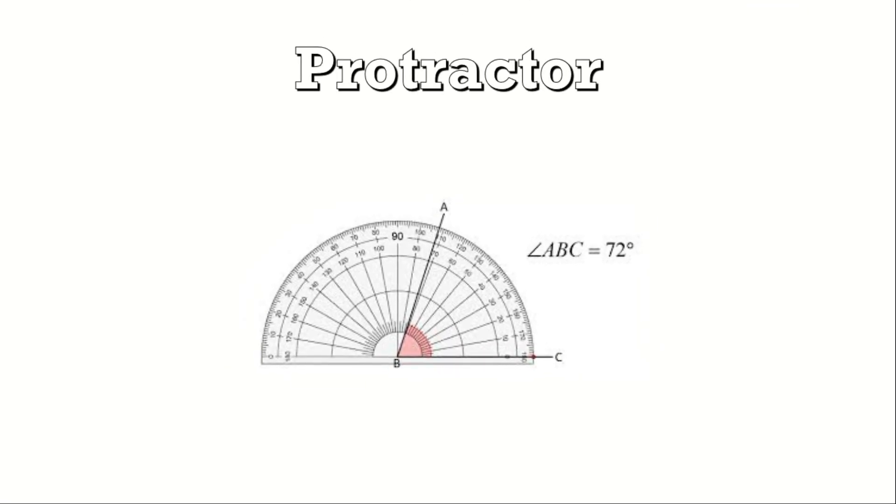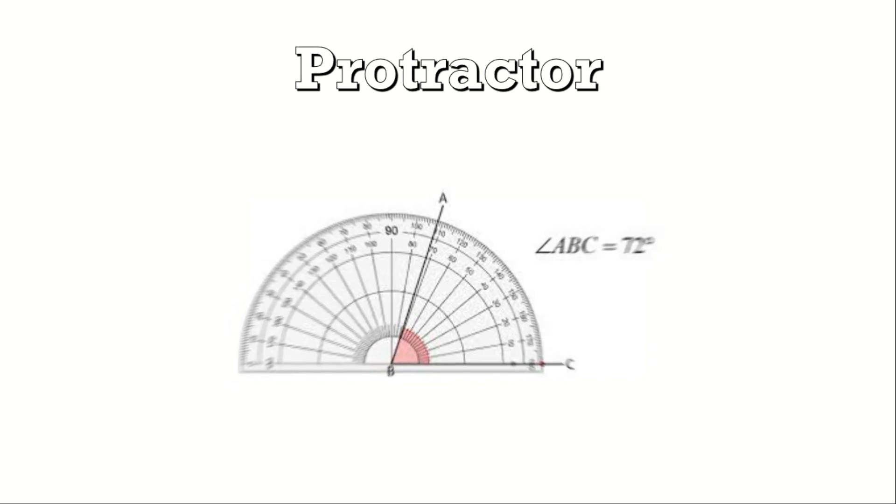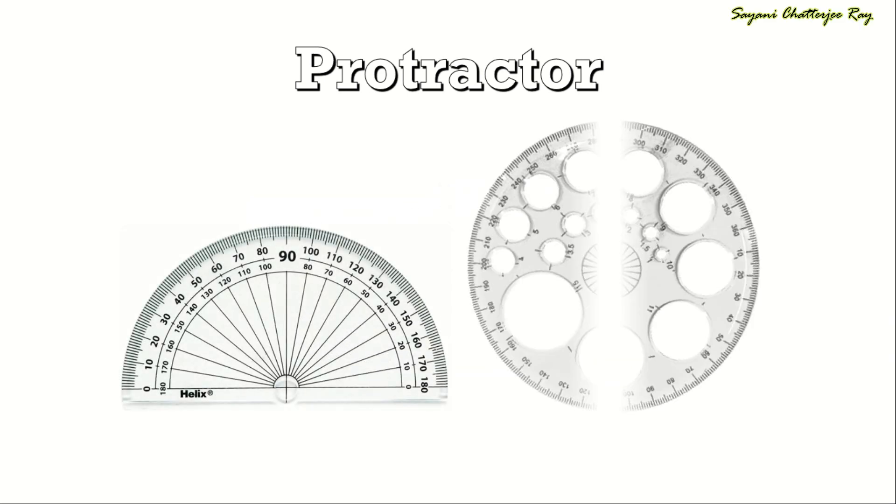To draw or measure any angles in technical or engineering drawing, we need a protractor. There are two types: a 180 degree protractor and a round protractor or 360 degree protractor.